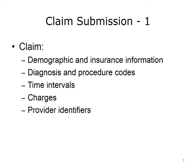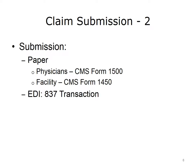After coding, a claim is prepared for submission to a third-party payer for reimbursement using a standard format. Included on a claim are demographic and insurance information, diagnosis codes, procedure codes with time intervals, charges, and practice-and-provider unique identifiers. Claims may be submitted on paper using the CMS Form 1500 and CMS Form 1450 for physicians and institutions, respectively.